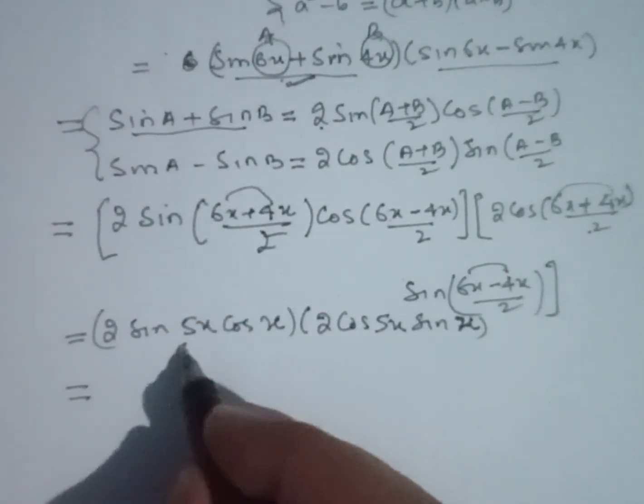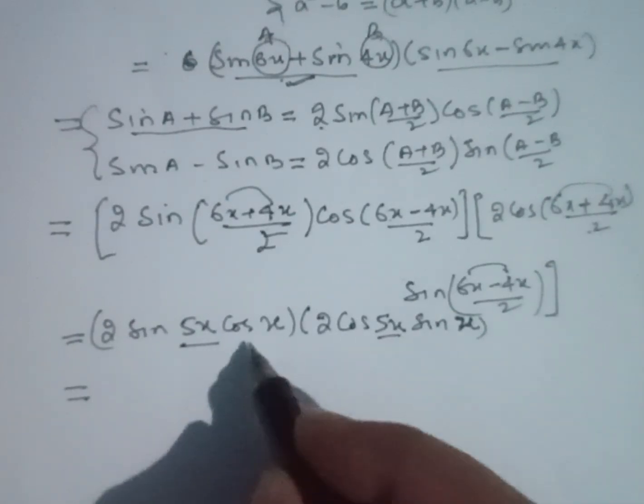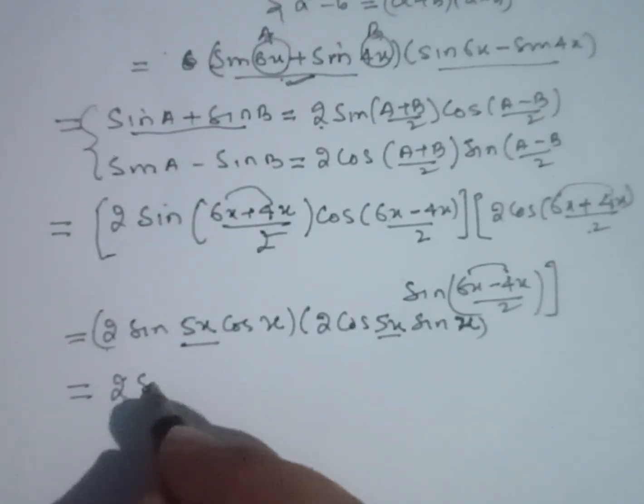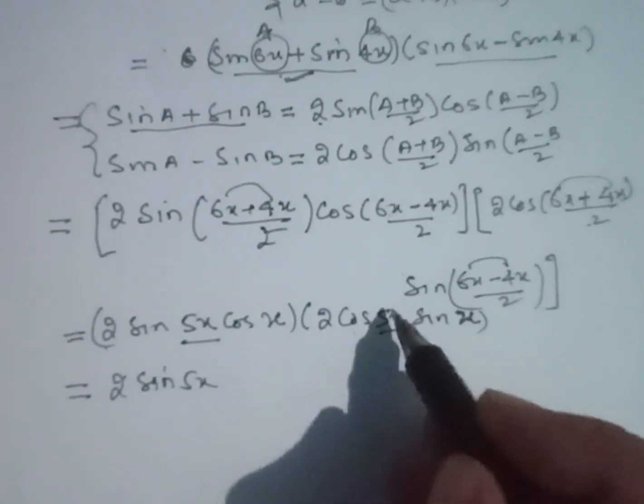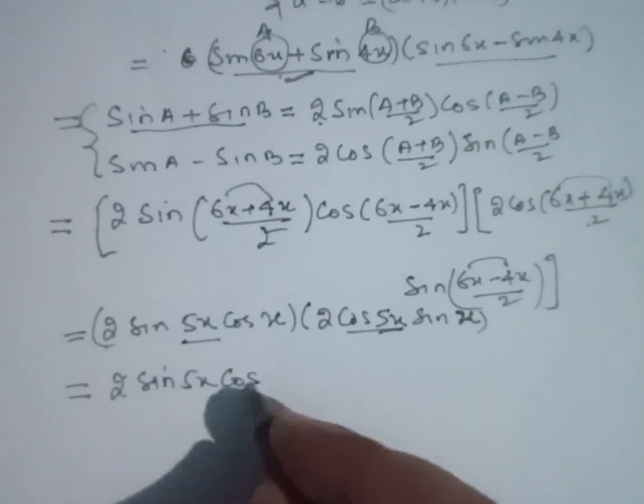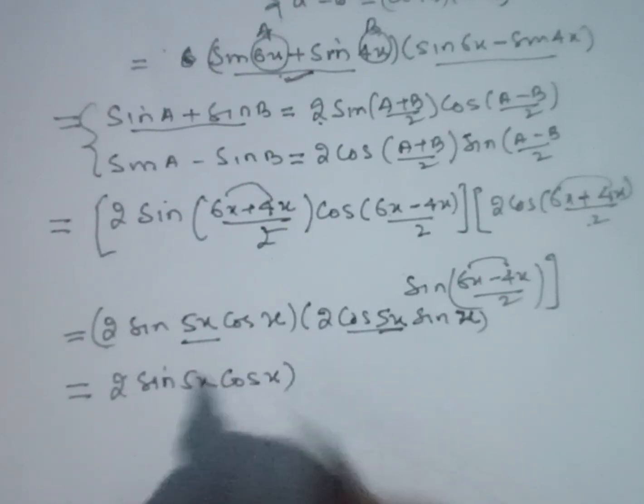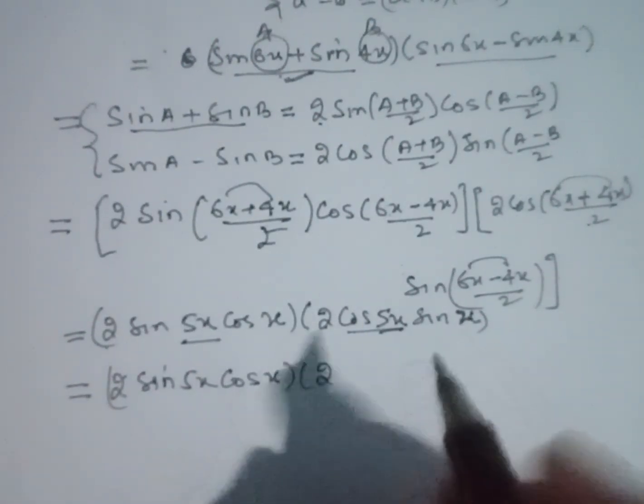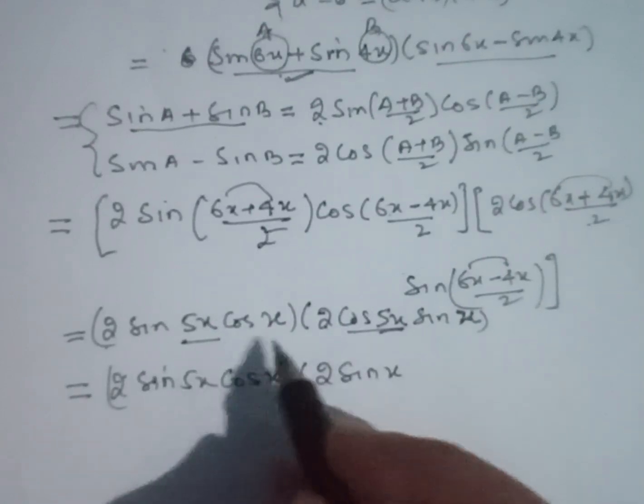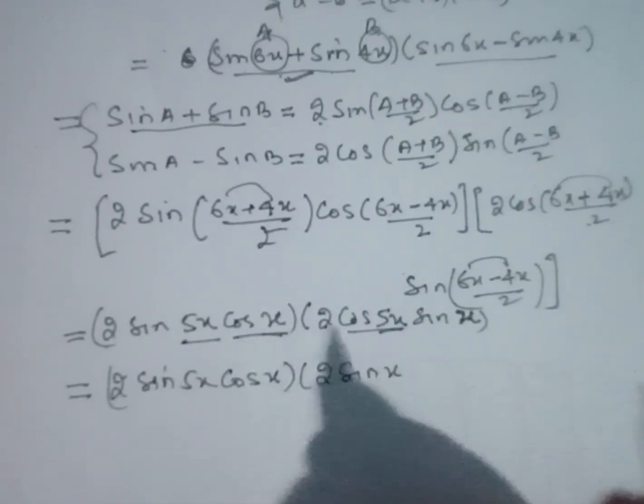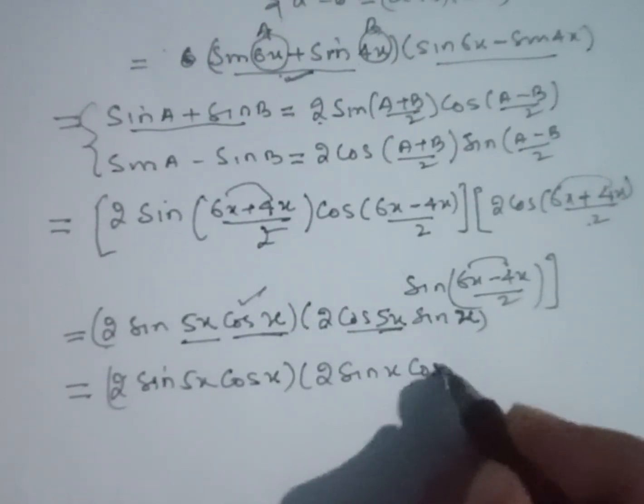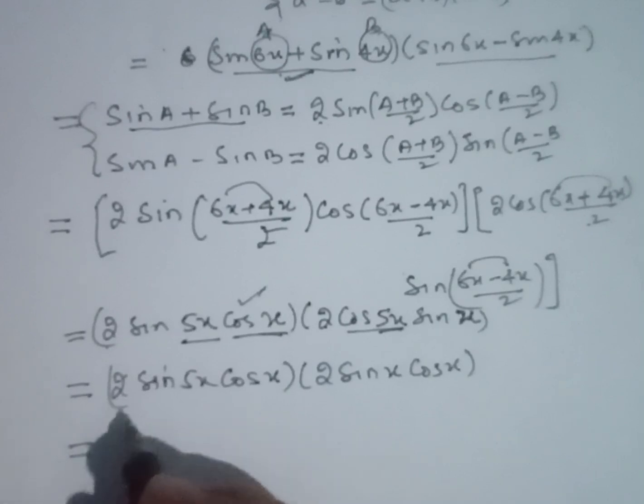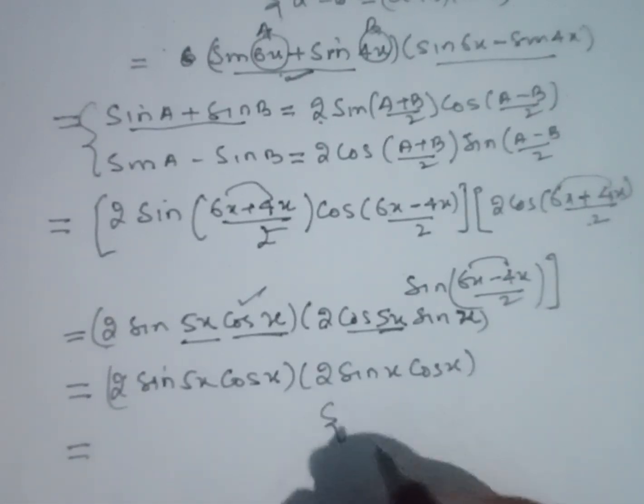this with same angles. So here 2 sin 5x and the term with angle 5x is cos x. Here 2 remaining and sin x, so cos x times 2 sin x equals, here is a new